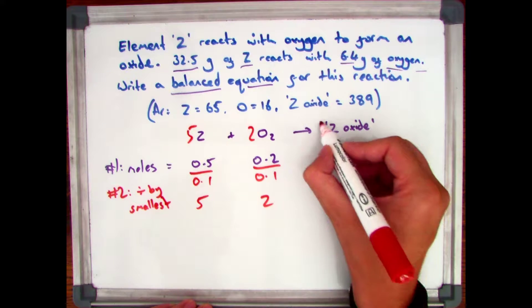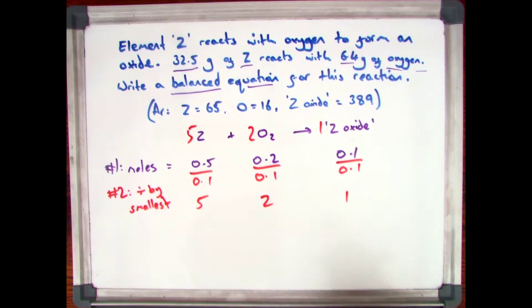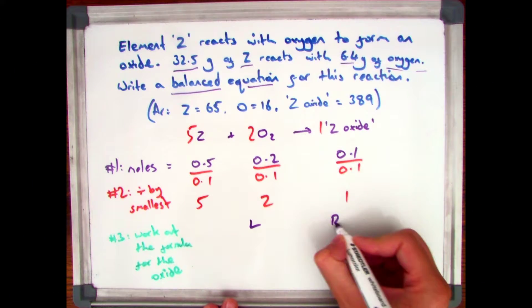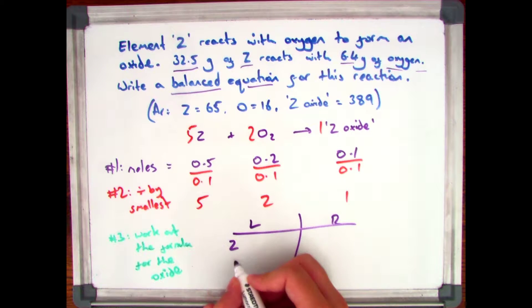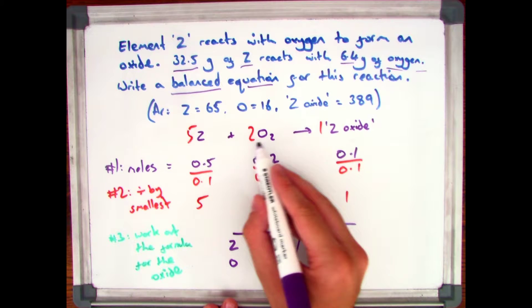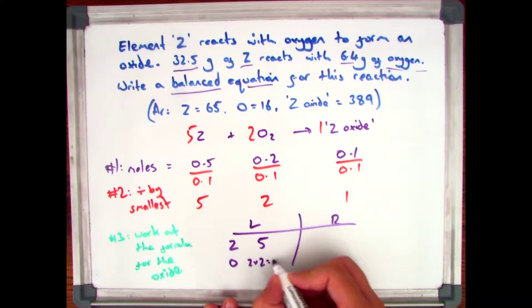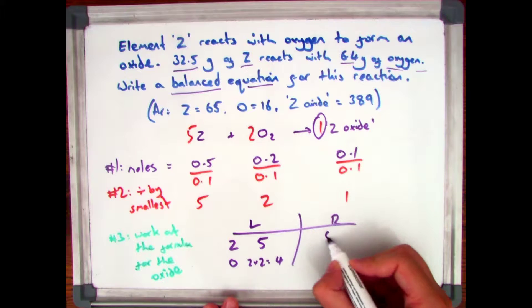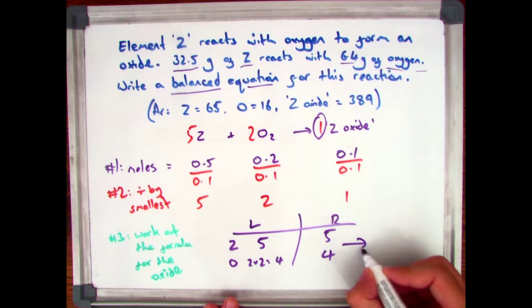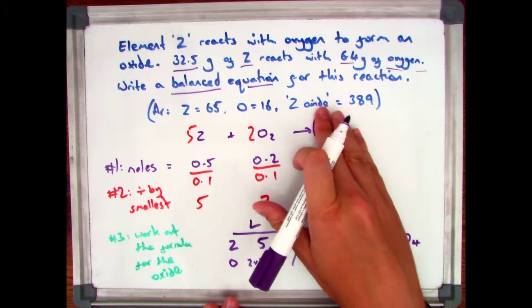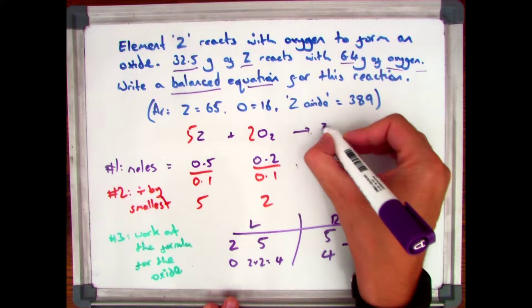That tells me I have 5Z, 2O₂, and 1 Z oxide. The next step is to work out the formula of your oxide now that you have the balanced part of the left hand side of the equation. Look at how many Zs and oxygens you have on the left hand side. I have 5Z and 2 times 2 which is 4 oxygens. Because I've only got one lot of my Z oxide, I've got to have 5Z and 4 oxygens.